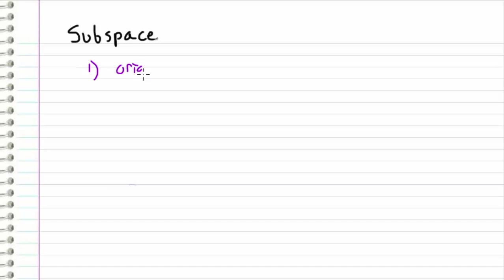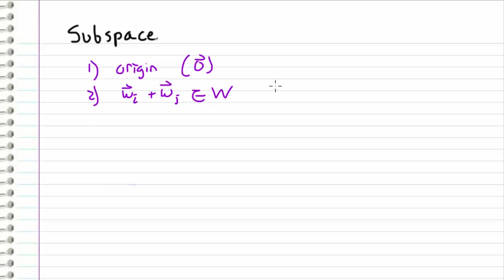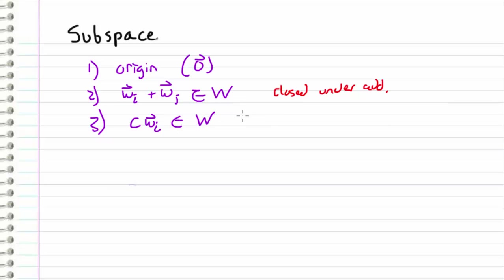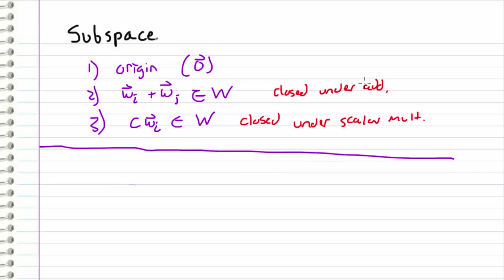To summarize, the three rules a subspace must obey are: first, it contains the origin or zero vector; second, the sum of any two vectors in W is also in W — the closed under addition property; and third, a scalar times any vector in W is also in W — the closed under scalar multiplication property. Now I want to relate subspaces to the concept of span from the previous video.